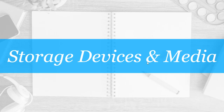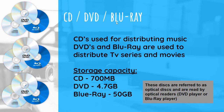Storage devices and media — CD, DVD, Blu-ray: CDs are used to distribute music; DVDs and Blu-ray are used to distribute TV series and movies. Storage capacity: a CD holds 700 MB, a DVD holds 4.7 GB, and Blu-ray holds 50 GB. These are referred to as optical discs, and an optical reader or optical drive could be a DVD player or a Blu-ray player.